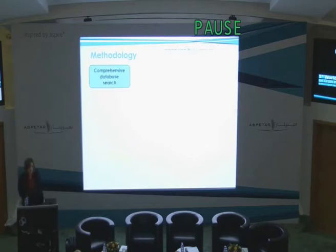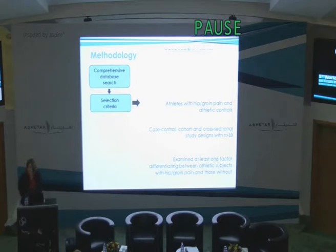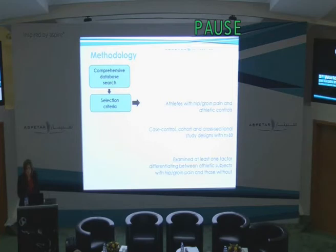Methodology. We're all familiar with the systematic review methodology. We consulted the PRISMA guidelines, did a comprehensive database search of nine databases, conducted in June of this year. Our selection criteria — athletes with hip and groin pain and matched athletic controls — significantly narrowed down our inclusion criteria. The type of studies we were looking at were case control, cohort and cross-sectional design, and we had a minimum N of 10 case and 10 control subjects.